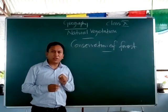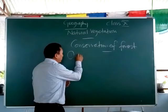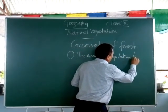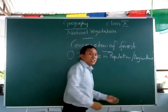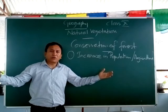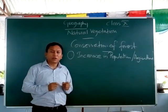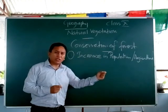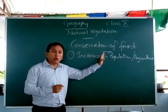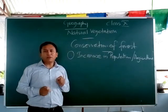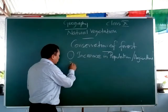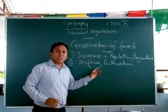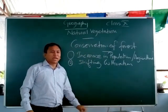Now why are the forests being depleted? The forests have been depleted because of various reasons. Firstly, because of the increase in population — as more and more people are there in a region, more and more forests are cleared for settlement and for converting the land into agricultural fields so that more crops can be grown. The second reason is the practice of shifting cultivation, because of which forests are also being destroyed.